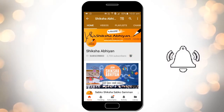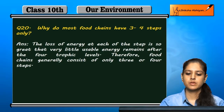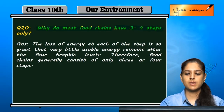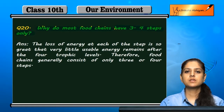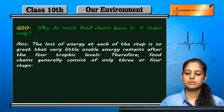Question number 20: Why do most food chains have three to four steps only?